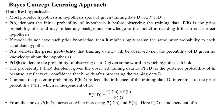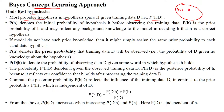This video explains the best concept learning approach, which is used to find the best hypothesis for a given problem statement. The most probable hypothesis in hypothesis space H, given training data, is denoted by the probability of H given D. The hypothesis space will have numerous hypotheses: H1, H2, H3, and so on — N number of hypotheses available in the hypothesis space.